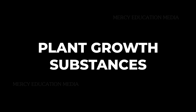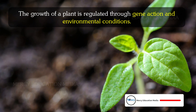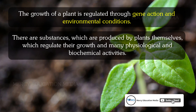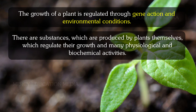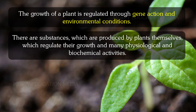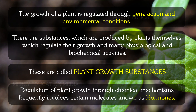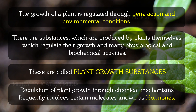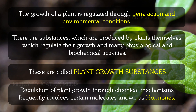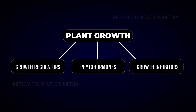Let us know about plant growth substances. The growth of a plant is regulated through gene action and environmental conditions. There are substances produced by plants themselves which regulate their growth and many physiological and biochemical activities. These are called plant growth substances. The regulation of plant growth through chemical mechanisms frequently involves certain molecules known as hormones. Plant growth involves growth regulators, phytohormones, and growth inhibitors.